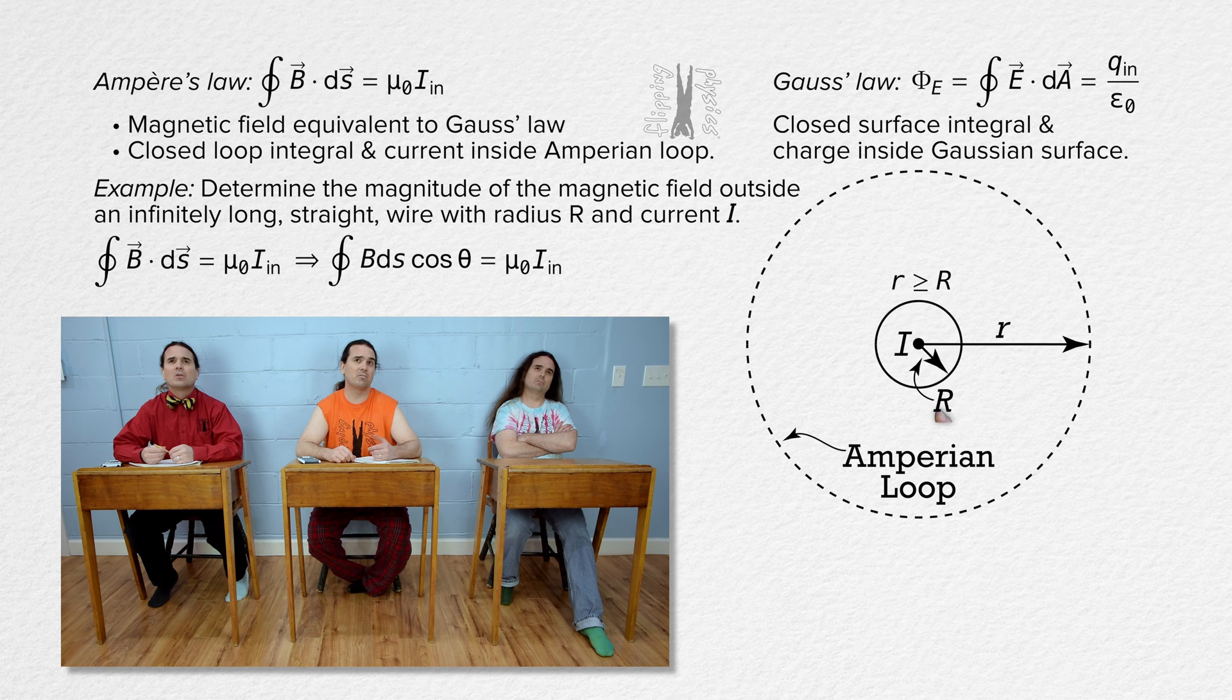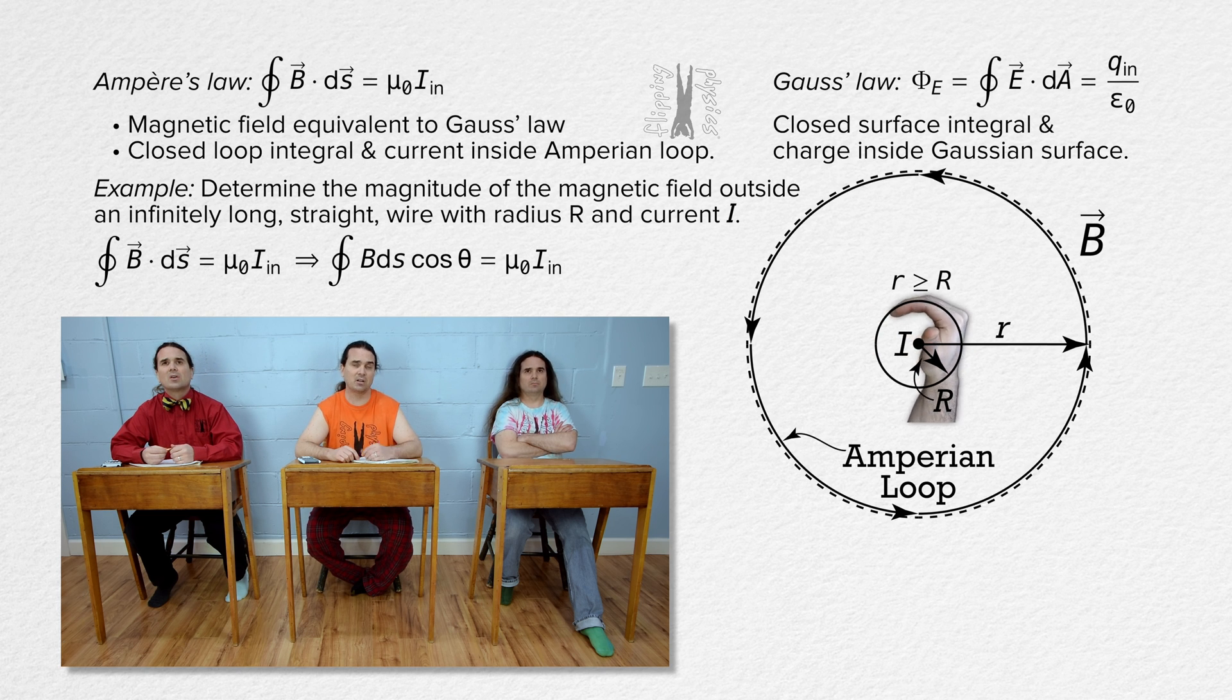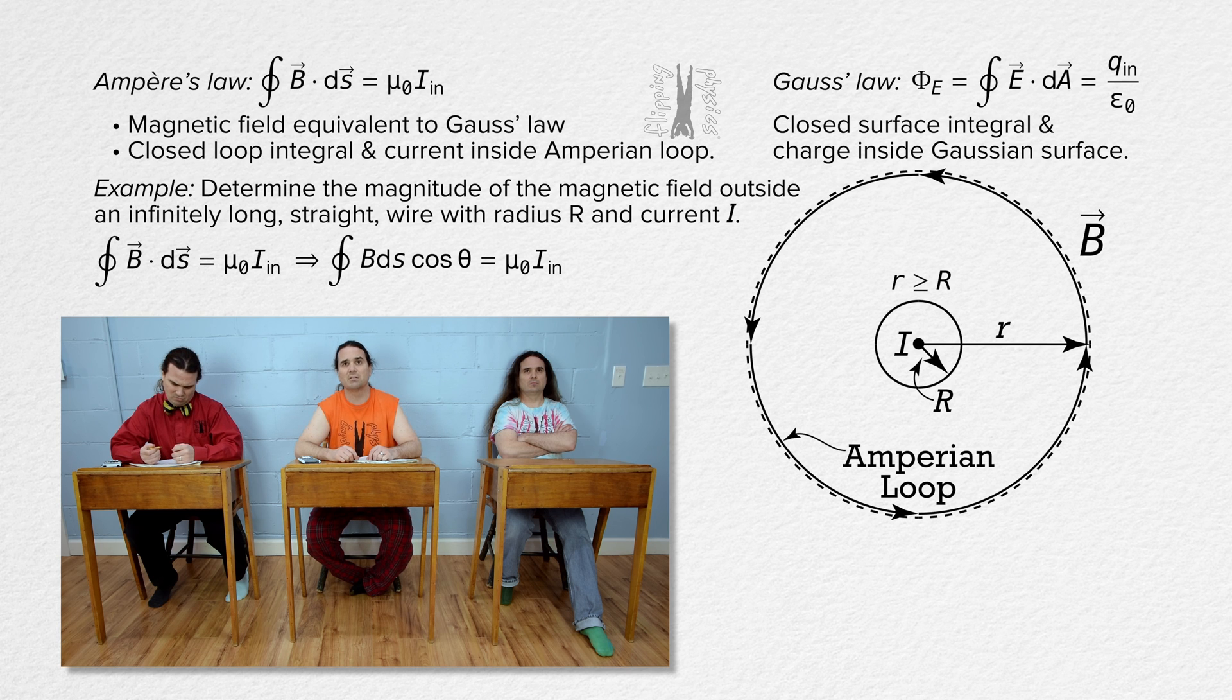Well, we just use the alternate right hand rule you taught us. We take the thumb of our right hand, point it in the direction of the current which is out of the screen, and our fingers curl in the direction of the magnetic field which is counterclockwise from this perspective. Yeah, the magnetic field from this current carrying wire is counterclockwise from this perspective. Thank you, Bobby.